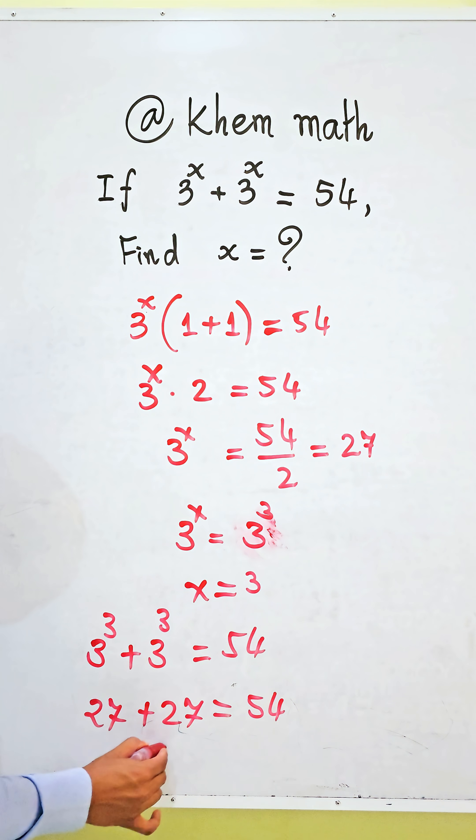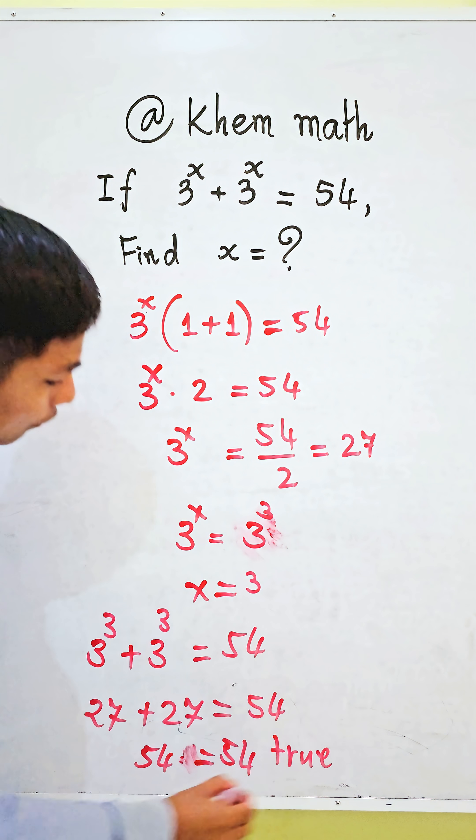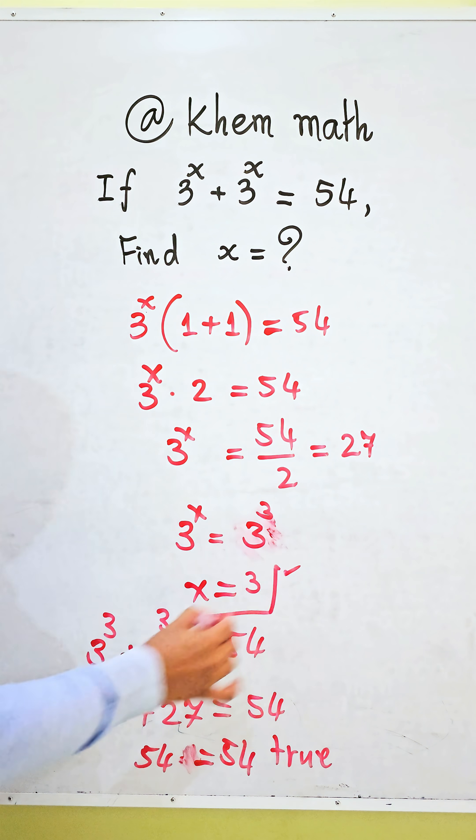So here, 54 equals 54. It's true, so our answer is x equals 3.